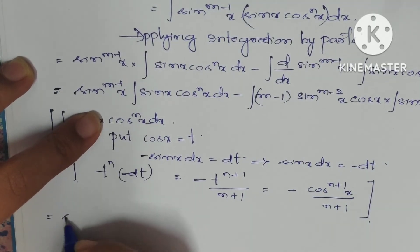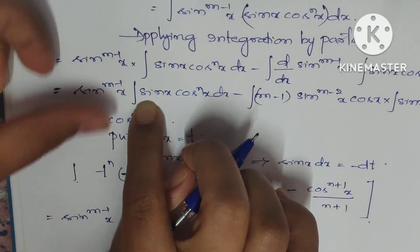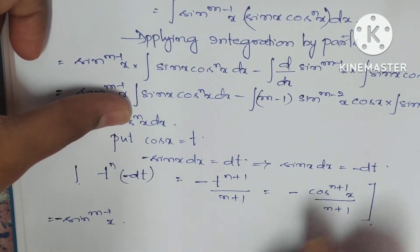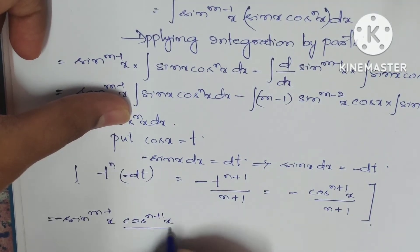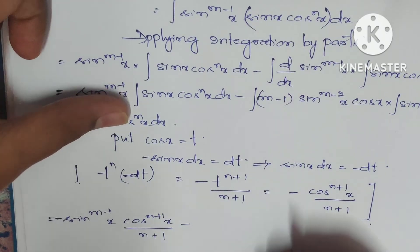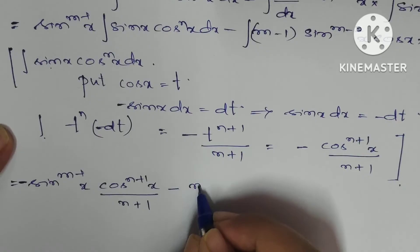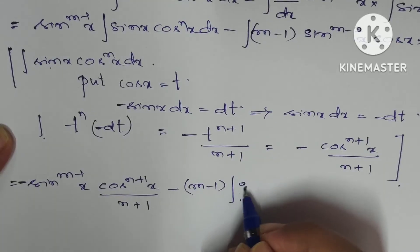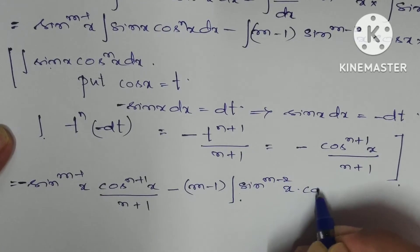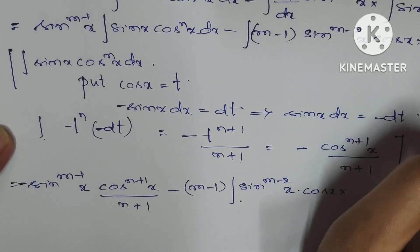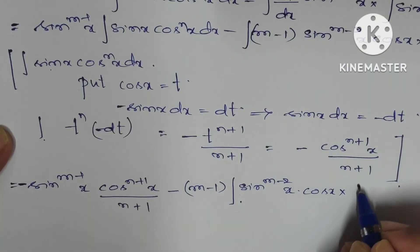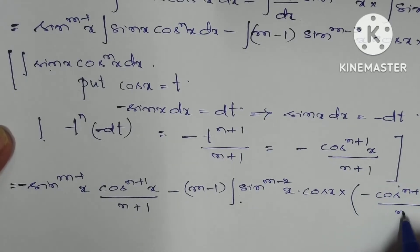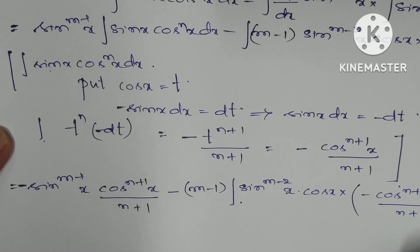Substituting this back into the previous step, we get: sin^(m-1)(x) · [-cos^(n+1)(x)/(n+1)], minus (m-1) · ∫sin^(m-2)(x) · cos(x) · [-cos^(n+1)(x)/(n+1)] dx.